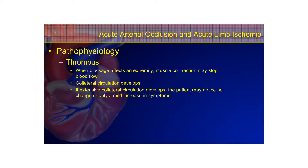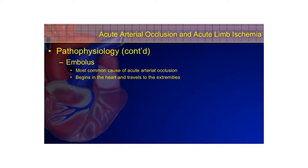An embolus can be a thrombus that breaks off, or it could be a fat embolus, an air embolus, or anything that travels and impedes blood flow. It is the most common cause of acute arterial occlusion, and it typically begins in the heart and travels to the different extremities.